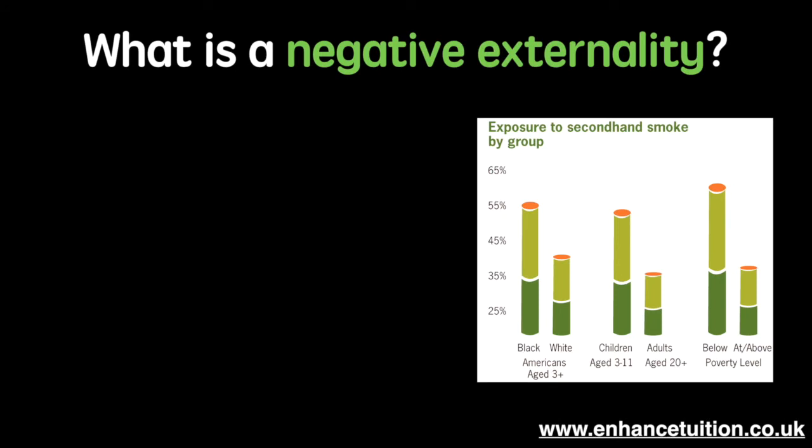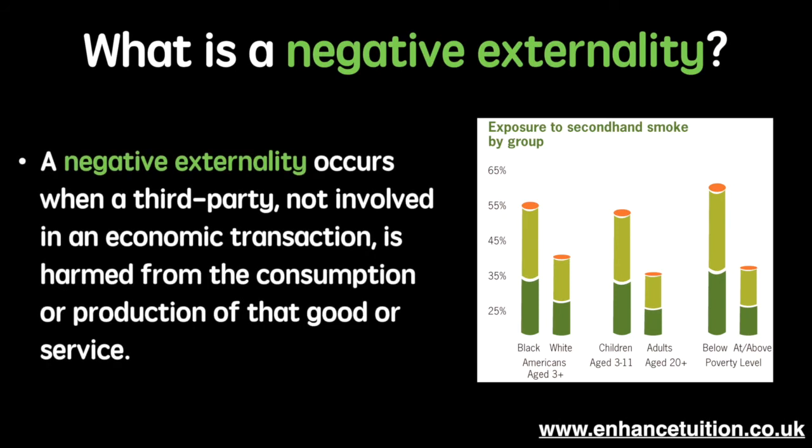So what exactly is a negative externality? A negative externality occurs when a third party not involved in an economic transaction is harmed from that transaction. A common example for consumption is smoking, which I will explain further in the next few slides.